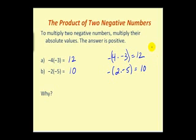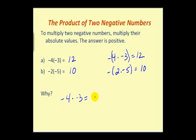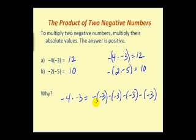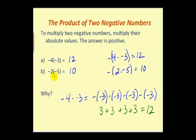If that's still not convincing, we can go back to the idea of multiplication as repeated addition. For negative 4 times negative 3, if we want a negative number of negative 3's, this translates into repeated subtraction — we subtract negative 3 four times. Since subtracting a negative is the same as adding a positive, this becomes 3 plus 3 plus 3 plus 3, which equals positive 12. So you can think of multiplying a negative times a negative as repeated subtraction, though the "opposite" argument may be clearer.